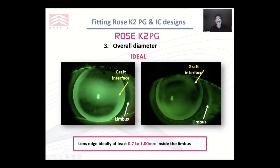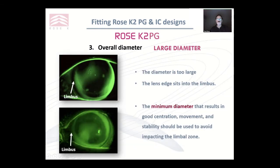Moving to diameter. The diameter you're trying to use for PG will give you at least 0.7 to 1 millimetre at the edge of the lens inside the limbus — this is not a lens that goes right out and covers the entire cornea. These examples show ideal diameters, still well clear of the limbus. In contrast, these two cases show large diameters where the lens is now impinging onto the limbus — both are too big. The rule of thumb is to use the minimum diameter that results in good centration, movement, and stability, and try to avoid impacting into the limbal area.